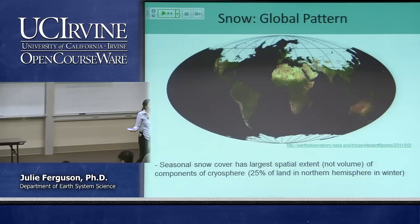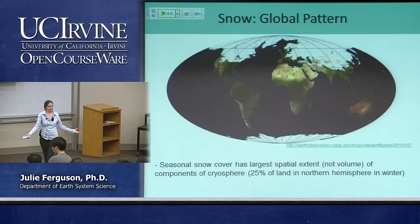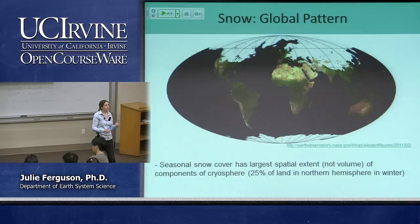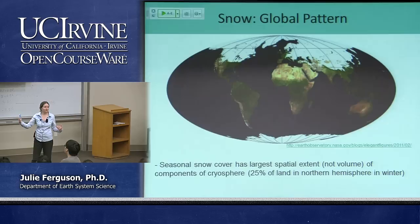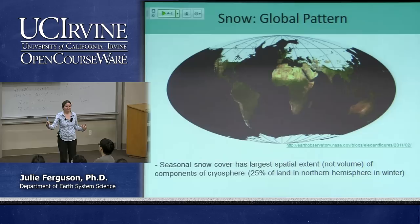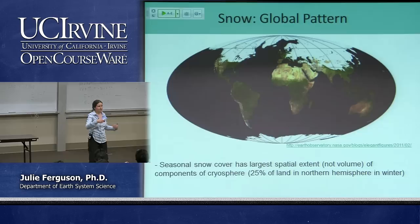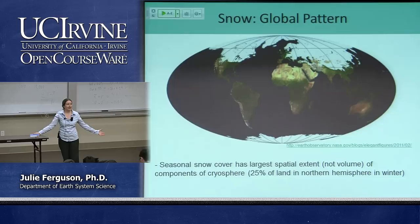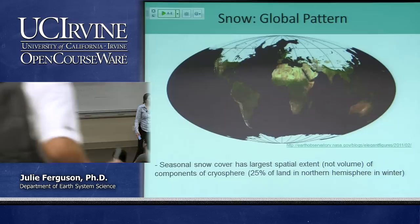Snow is by far the bit of the cryosphere that we're most likely to come into contact with, because spatially it's the most extensive. Year to year we get much more snow on larger areas of the earth. It's still not the greatest component by volume — the biggest component by volume is ice sheets, things like Antarctica and Greenland with those three, four, five kilometre thick sheets of ice. Those are what we're concerned about melting and contributing to sea level rise. But snow covers the most area, at least in winter — 25% of land in the northern hemisphere can be covered by snow in winter, as that map shows.